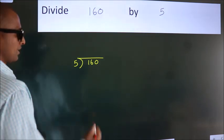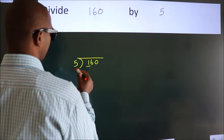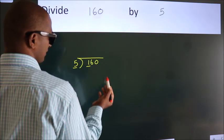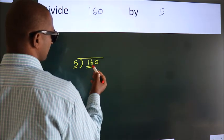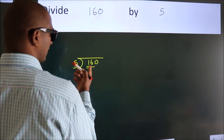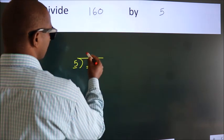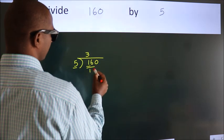Next, here we have 1, here 5. 1 is smaller than 5, so we should take 2 numbers: 16. A number close to 16 in the 5 table is 5 threes, which is 15.